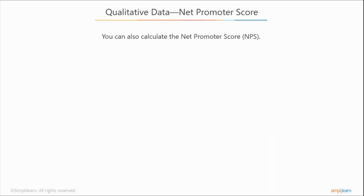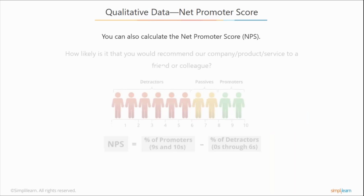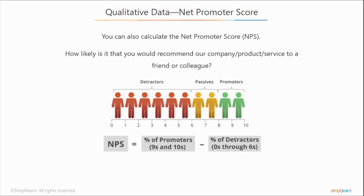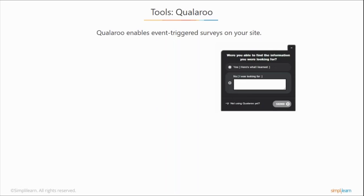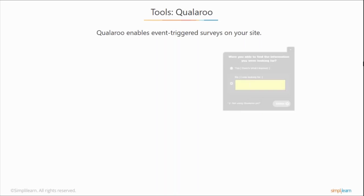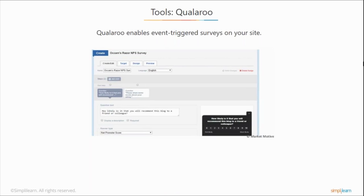From this data, you can also calculate the net promoter score, which basically answers the question of referral — it helps quantify the probability that a visitor to your site would refer your company, products, or services to someone else. One of the tools that's really great — another low-cost tool — is called Qualaroo. This enables event-triggered surveys on your site, and this is an example of what that survey looks like to the user as a pop-up on your website.